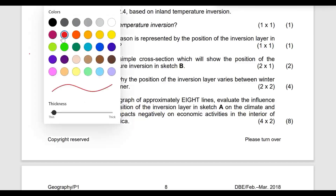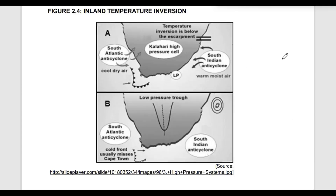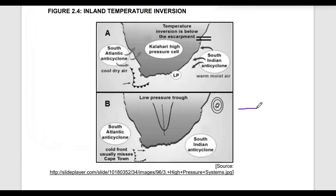Question 2.4.3 asks us to draw a cross-section showing the position of the temperature inversion in sketch B. I'm drawing the sketch to show the position of the inversion layer. This is the plateau, this is the escarpment coming down to the coastal areas and the ocean. In the ocean you have your coastal low pressure. The fundamental thing is to show the position of the temperature inversion.